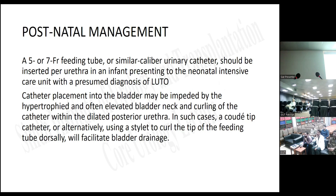For postnatal management, a 5 or 7 Fr feeding tube or similar caliber urinary catheter should be inserted per urethra in an infant presenting to the neonatal ICU with a presumed diagnosis of lower urinary tract obstruction. Catheter placement may be impeded by the hypertrophic elevated bladder neck or curling within the dilated posterior urethra. In such cases, a Coude tip catheter or alternatively using a stylet to curl the tip of the feeding tube dorsally will facilitate bladder drainage.